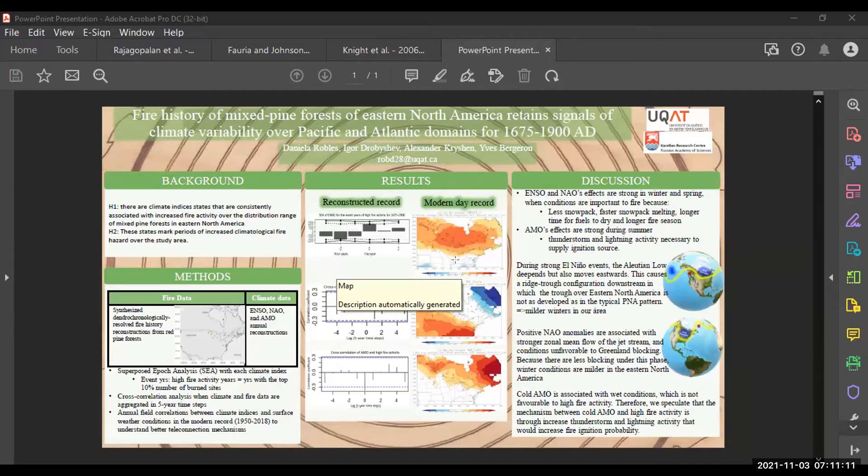Specifically the top 10%. I also conducted cross correlation analysis, when the climate and the fire data were aggregated in five year time steps. And I did this in part because since the fire records come from different authors, there could be some inconsistencies in the exact fire year. And to test my second hypothesis, I conducted field correlation analysis in climate explorer, between these climate indices and surface weather conditions in the modern records. I'm going to show you surface temperature.